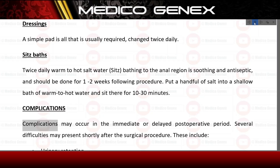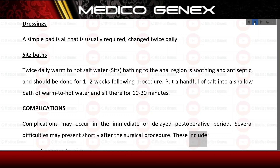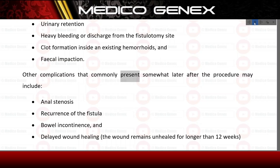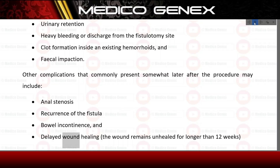Complications. Complications may occur in the immediate or delayed postoperative period. Several difficulties may present shortly after the surgical procedure, including: urinary retention, heavy bleeding or discharge from the fistulotomy site, clot formation inside existing hemorrhoids, and fecal impaction. Other complications that commonly present somewhat later after the procedure may include: anal stenosis, recurrence of the fistula, bowel incontinence, and delayed wound healing, where the wound remains unhealed for longer than 12 weeks.